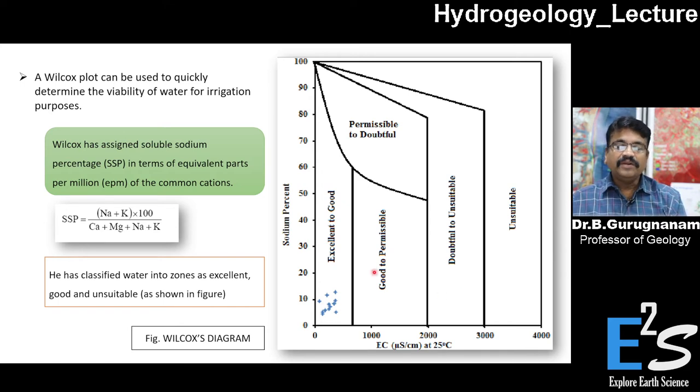Normally, sodium higher percentage we will not suggest for any irrigation purpose. The second zone is good to permissible if it is up to 50 to 60 percent of sodium and EC between 749 to 2000. This is good to permissible, excellent to good up to 60. Then, if EC is very less and sodium is high, maybe you can think to use this water for agriculture.